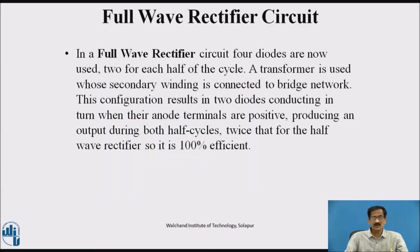In Full Wave Rectifier Circuit, four diodes are used, two for each half of the cycle. A transformer is used whose secondary winding is connected to bridge network. This configuration results in two diodes conducting in turn when their anode terminals are positive, producing output during both half cycles. Twice that for the half wave rectifier, so it is 100% efficient.